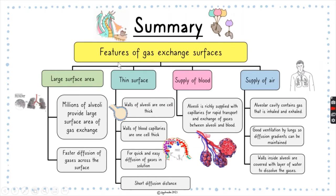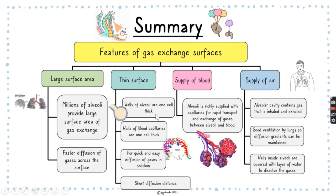In the previous lesson, we looked at features of gas exchange surfaces. We want a large surface area, provided by millions of alveoli, which gives a large surface area for gas exchange and creates faster diffusion of gases. We also want a thin surface — walls of the alveoli are one cell thick, and walls of blood capillaries are also one cell thick — for quick and easy diffusion of gases in solution, giving a short diffusion distance.